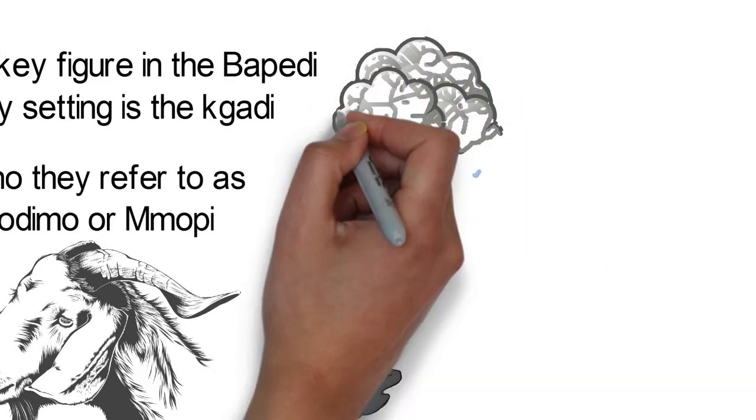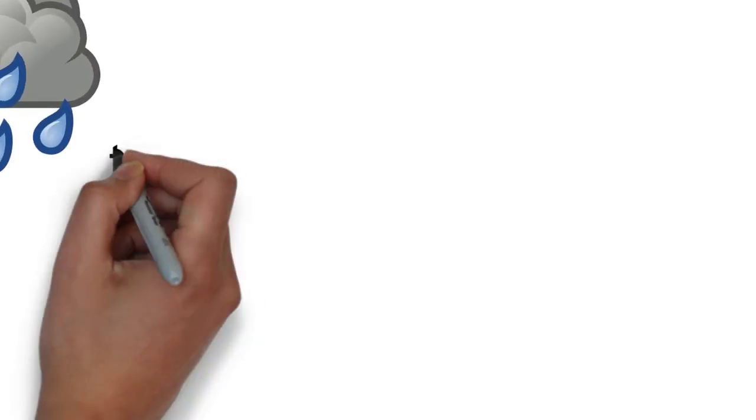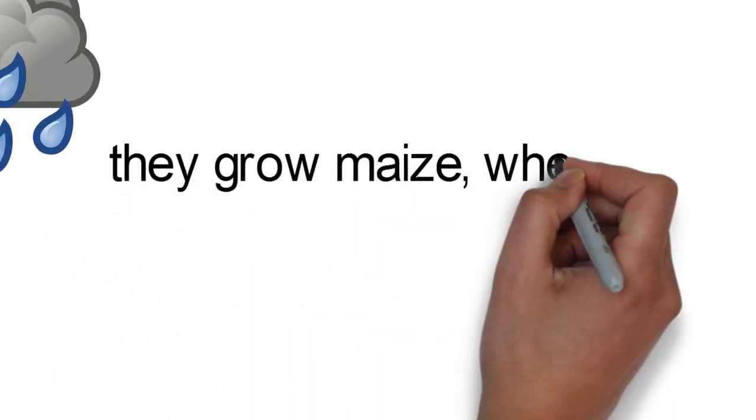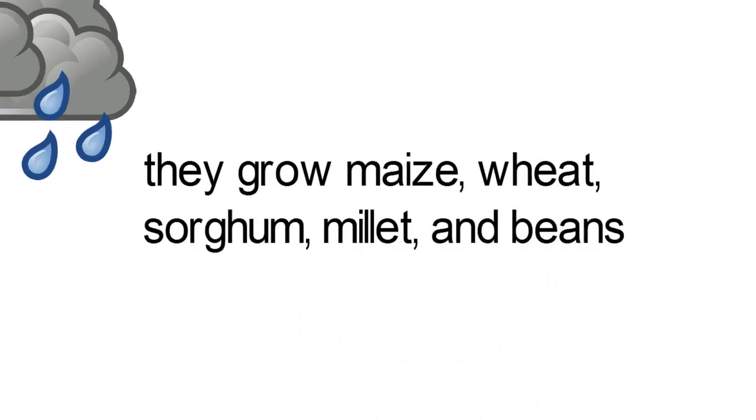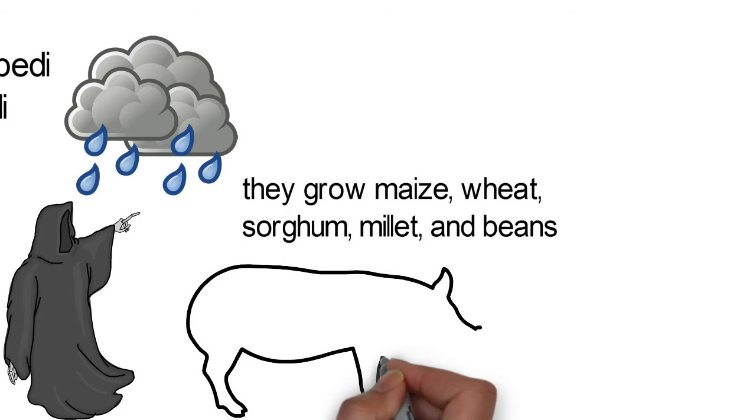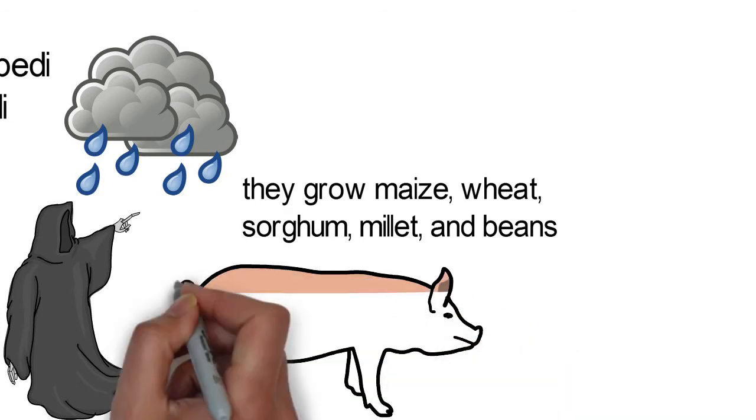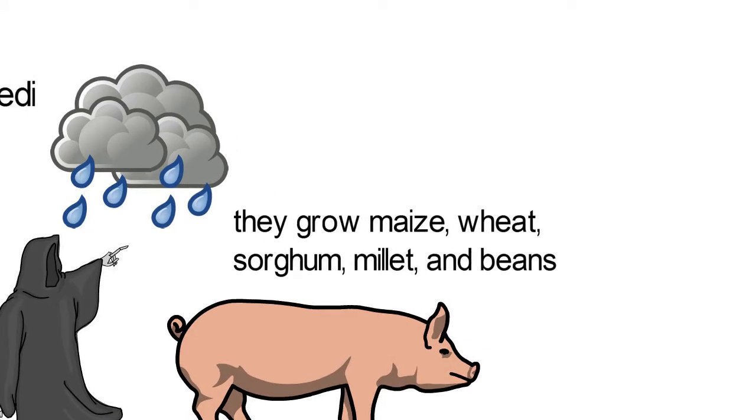Rainfall in the Bapedi area is relatively low. However, they grow maize, wheat, sorghum, millet, and beans. They also rear livestock like goats, sheep, cattle, fowl, and pigs.